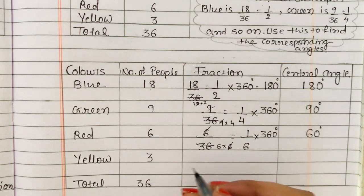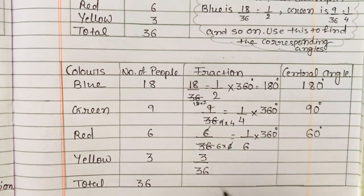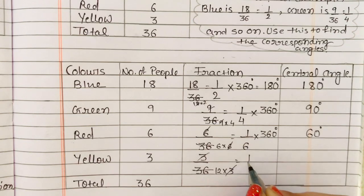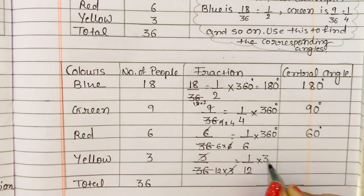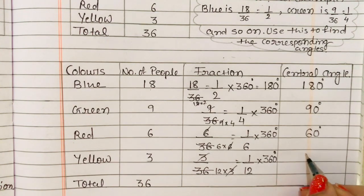Then the last one is yellow, that is 3 upon total 36. 12 threes are 36, so 3 cancels. We multiply 1 upon 12 into 360 degrees. So 360 divided by 12 gives us 30 degrees.